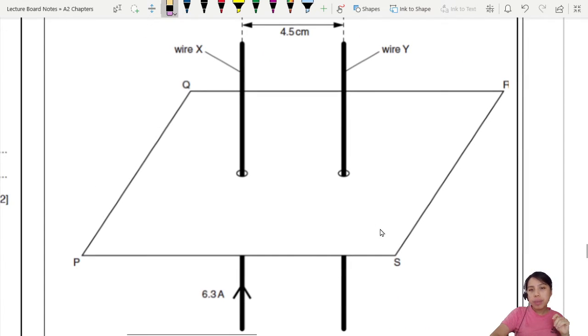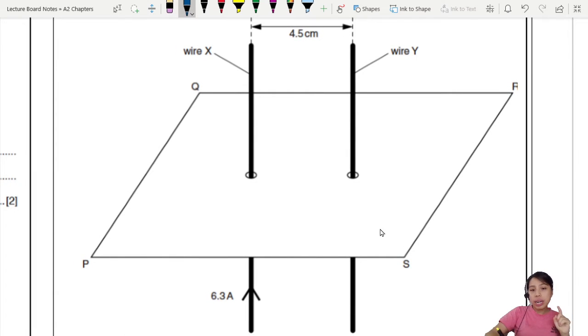Two long straight vertical wires separated by a distance 4.5 cm. The wires pass through horizontal card PQRS. The wire in X, the current is 6.3 amps upwards initially. There is no current in wire Y. On the figure, sketch the magnetic flux pattern due to the current in wire X. Show at least 4 flux lines.